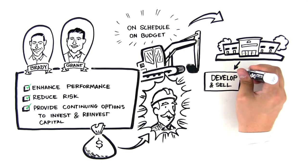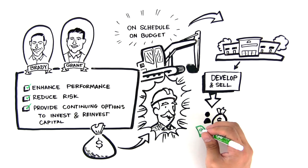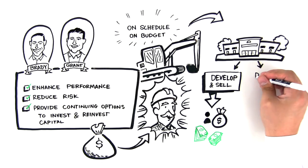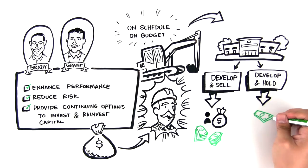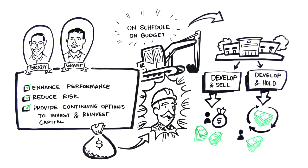Develop and sell to reimburse the equity investors their original funds and split the profits with them, or develop and hold to generate continuous cash flow and split it with the equity investors.